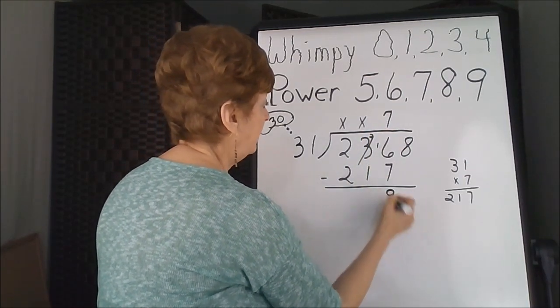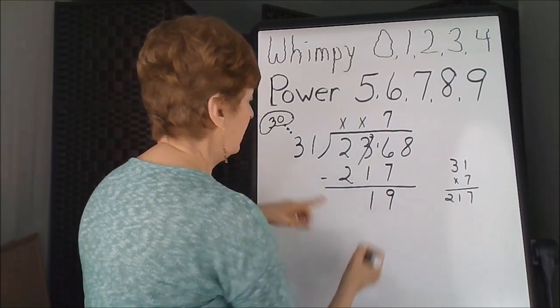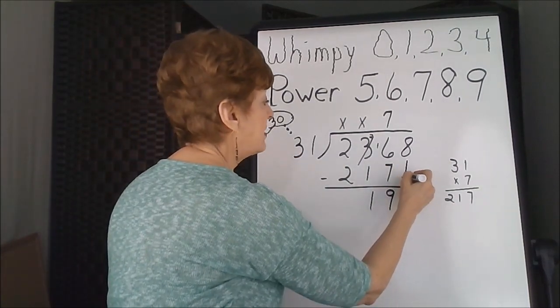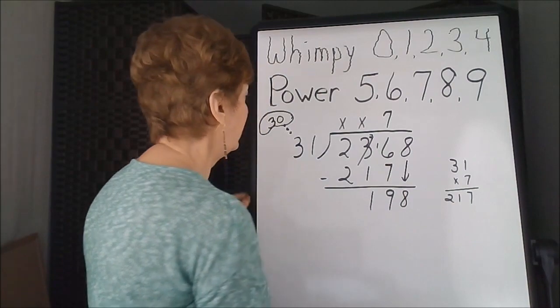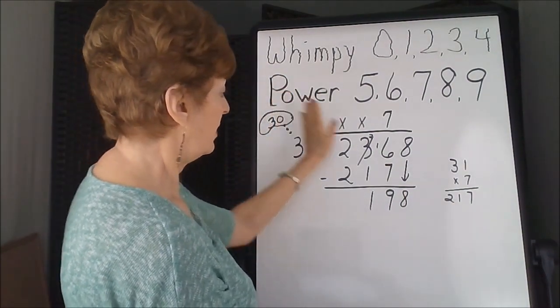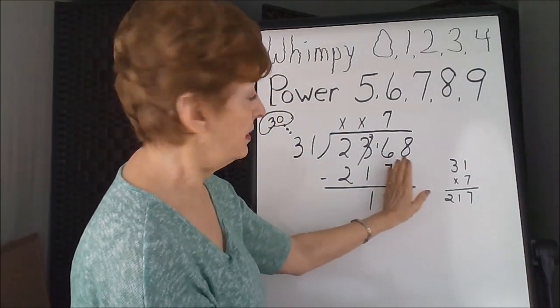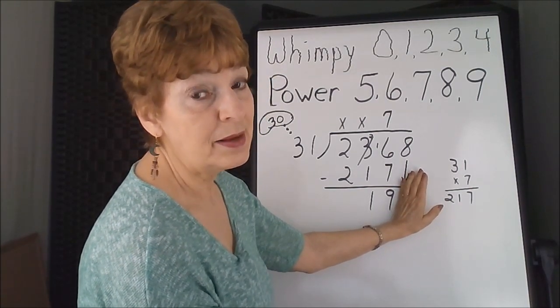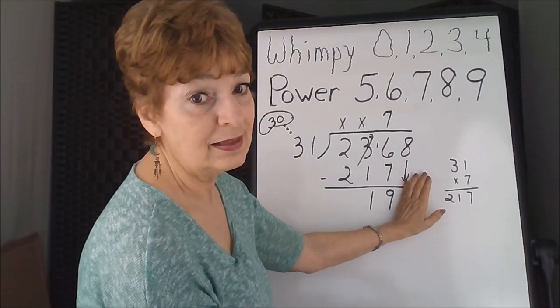This is 9 and 1, 19 is smaller, so I can bring down my next number 8. 3 goes into 1, it doesn't, 3 goes into 19, 6 times, 6 times 3 is 18, let's use it.